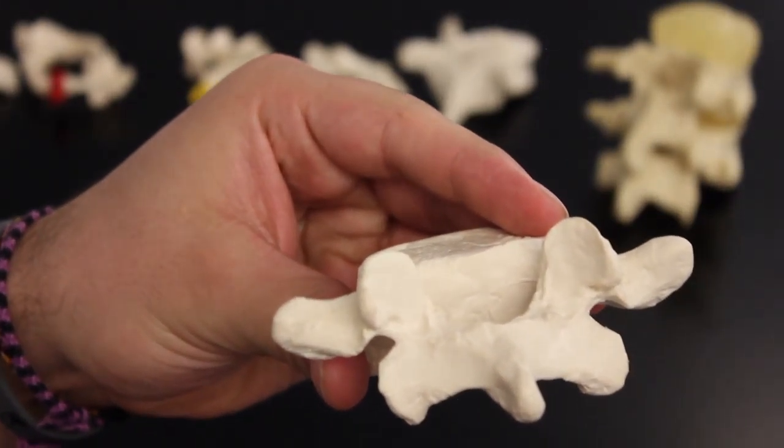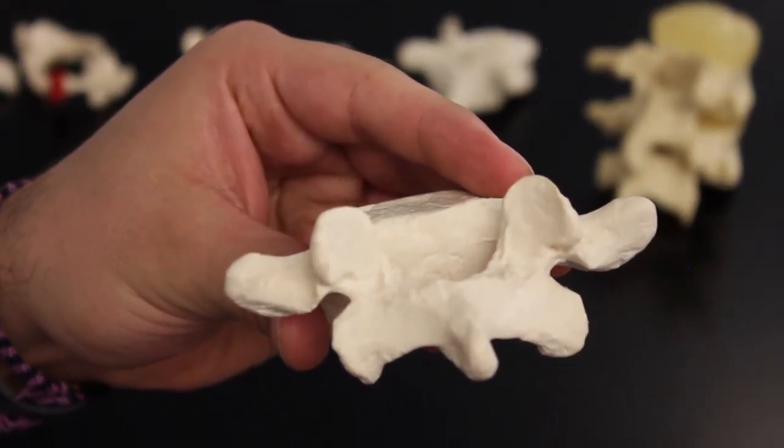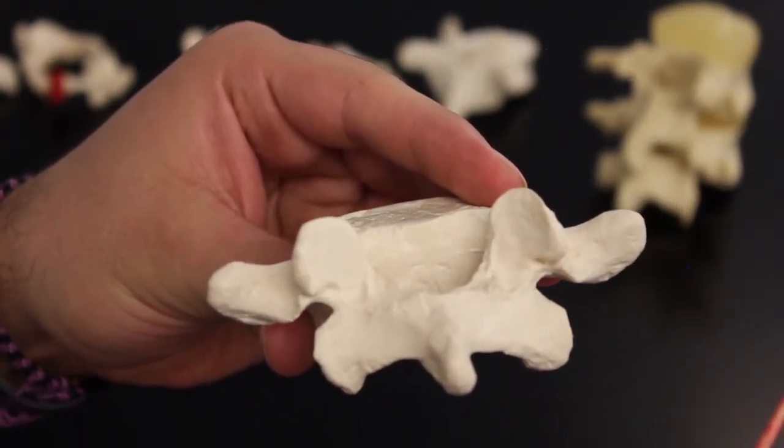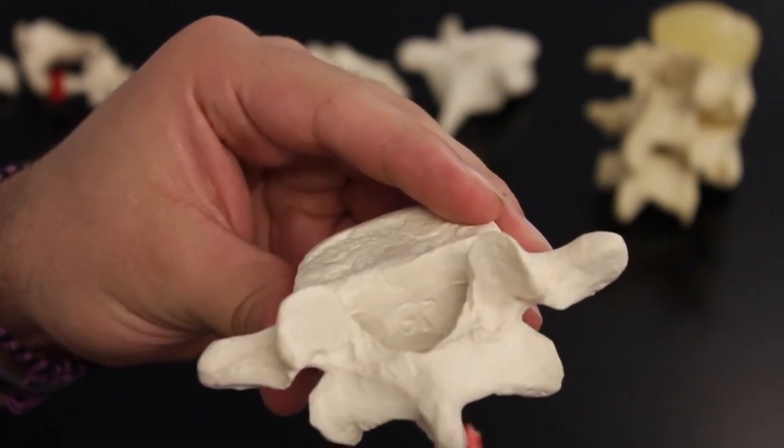If you look at the lumbar again, if you remember what we said - breakfast at seven, lunch at 12, and dinner at five - so we have seven cervical vertebrae, 12 thoracic vertebrae, and we're going to have five lumbar vertebrae.